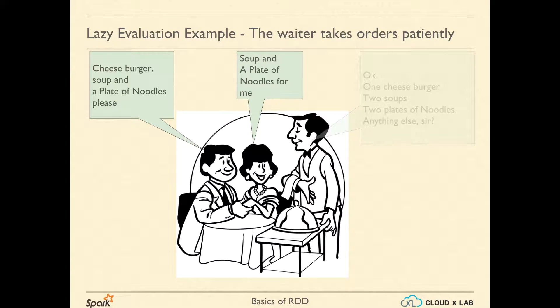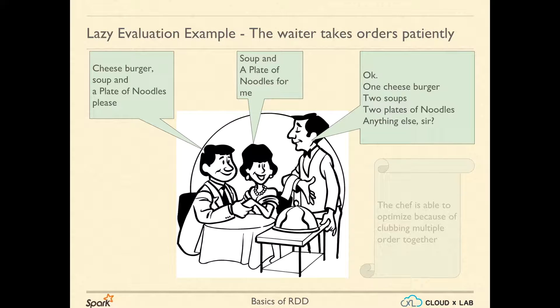Then the waiter goes back to the kitchen with your orders and hands them over to the chef. The chef is able to optimize by clubbing multiple orders together.